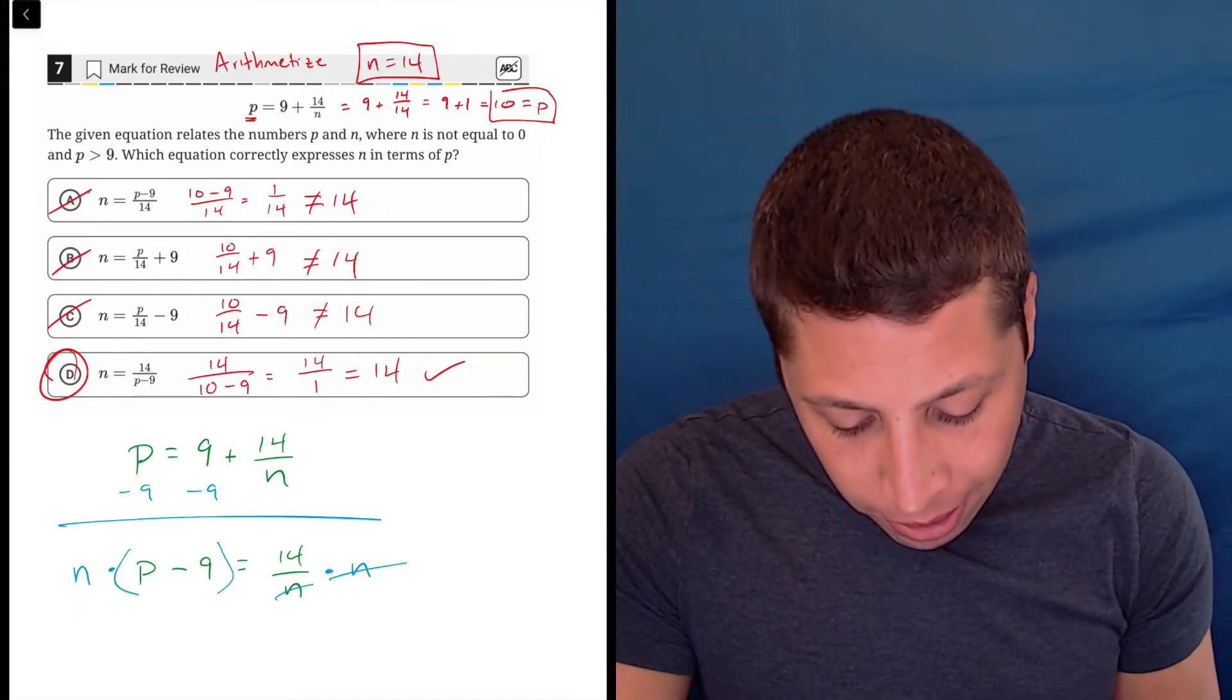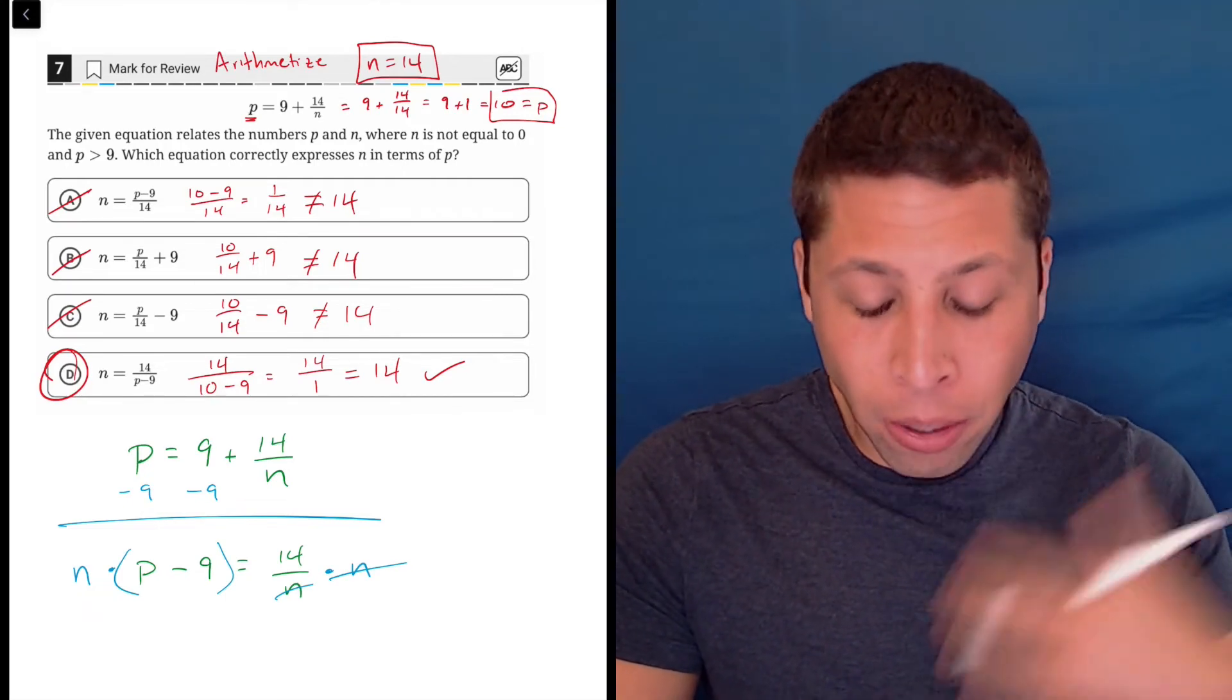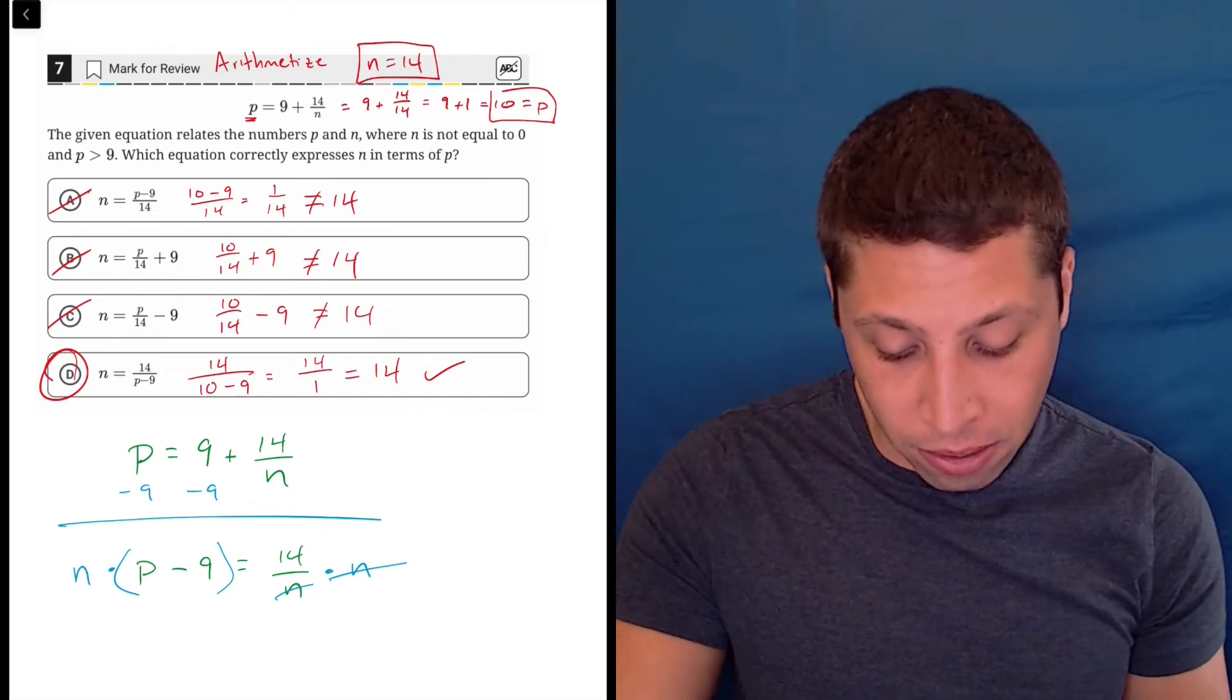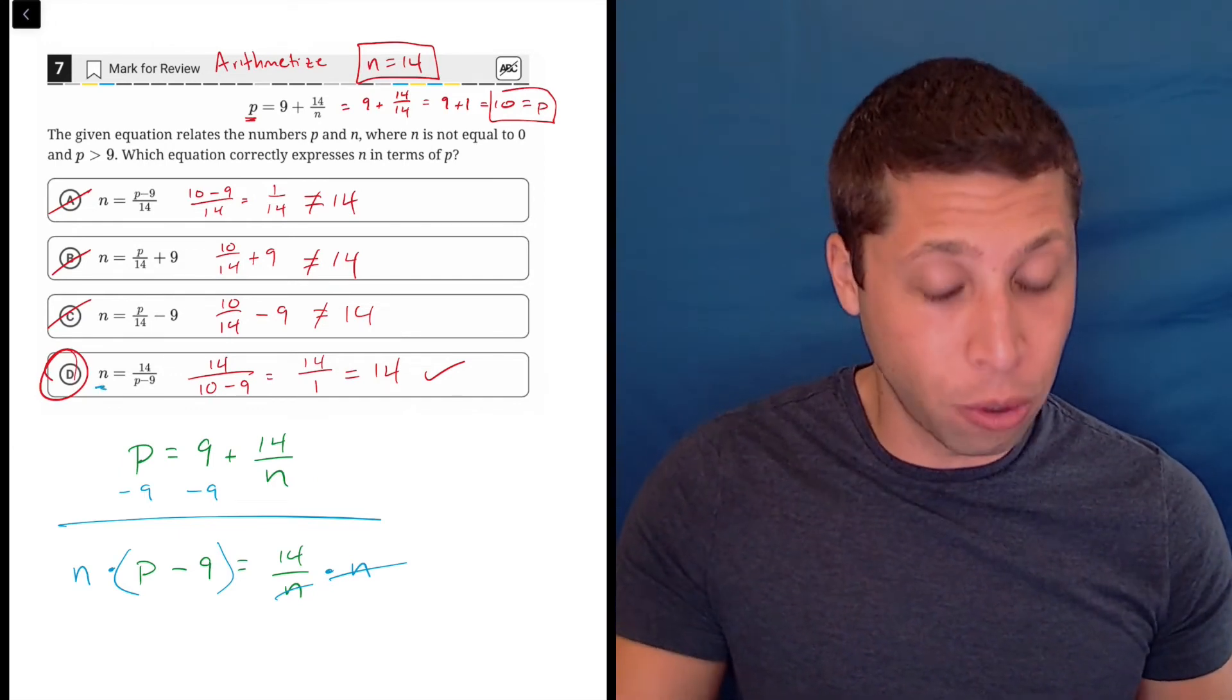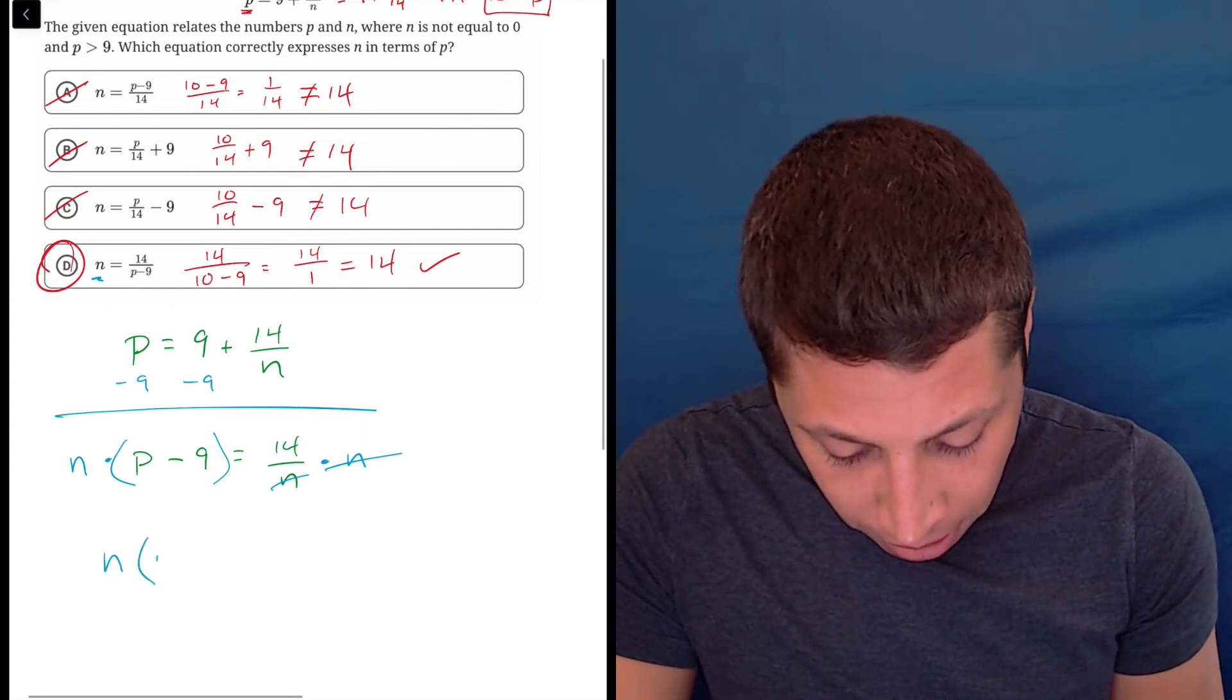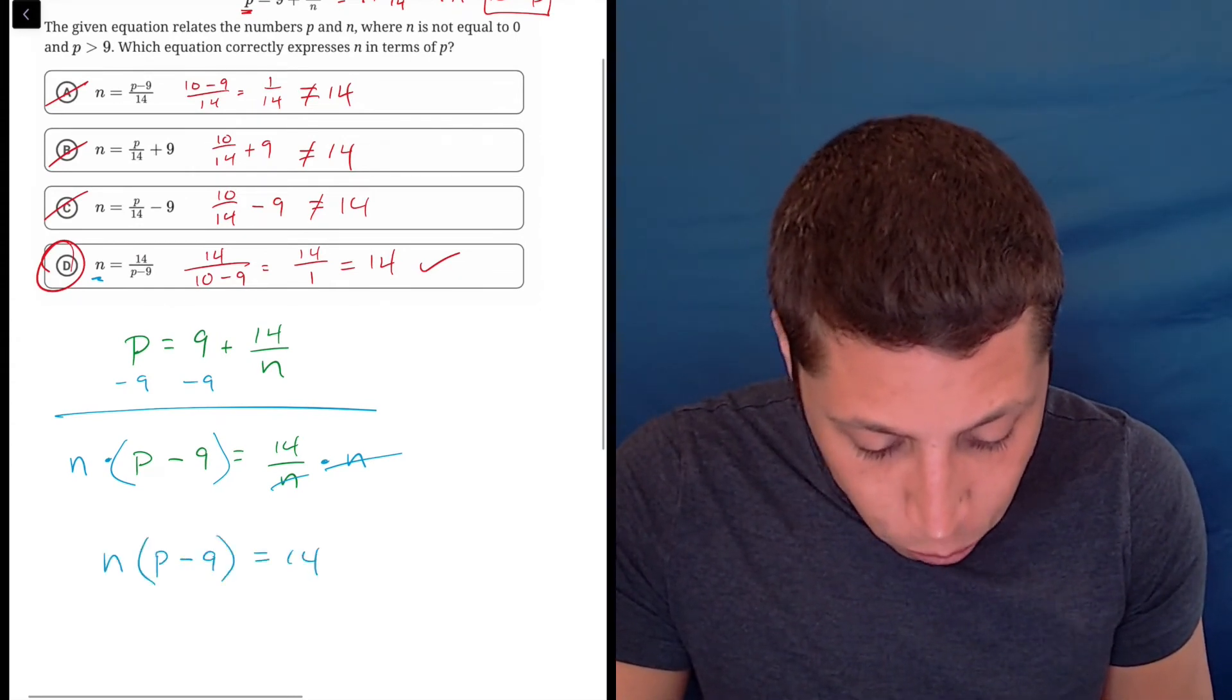On the left side, normally we would distribute, but I don't really want to distribute. I don't want the n to get mixed in with all this other stuff because eventually I want n to be by itself. So, we should leave it off to the side. And just to rewrite things here, n times p minus 9 equals 14.